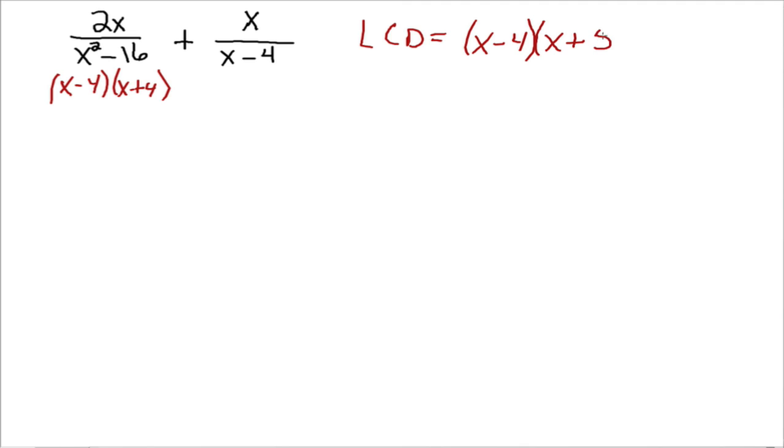Alright, so now we're looking at this, whoops, I've written a 5, I'm not sure why I'm writing a 5, so x plus 4. Alright, so the LCD is x minus 4 times x plus 4.